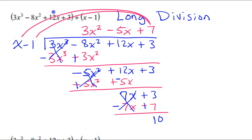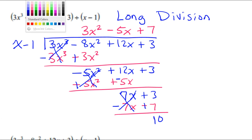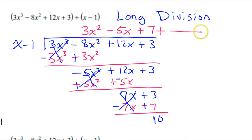And again, just like we did when we did synthetic division, what you do with the remainder is you add it on the end in a fraction. You put the remainder over what you divided by. So 10 over x minus 1.